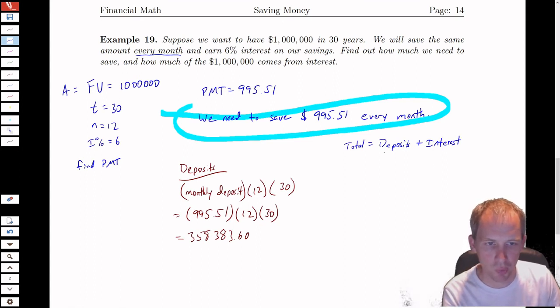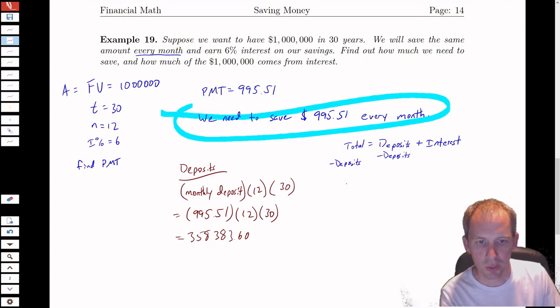So if I want to find the interest, I'm going to subtract deposits from both sides. So what I want to do is take the total minus deposits.